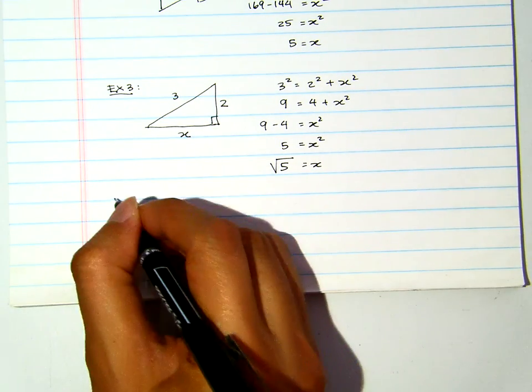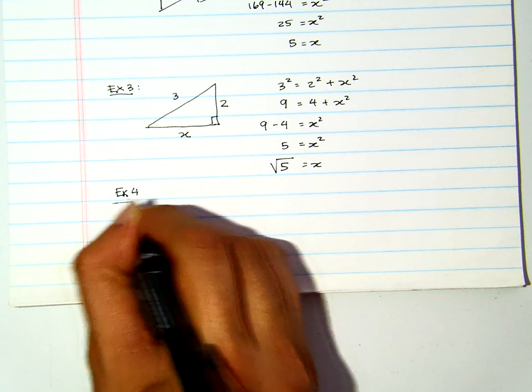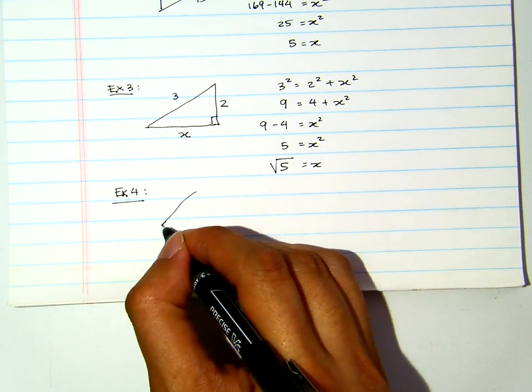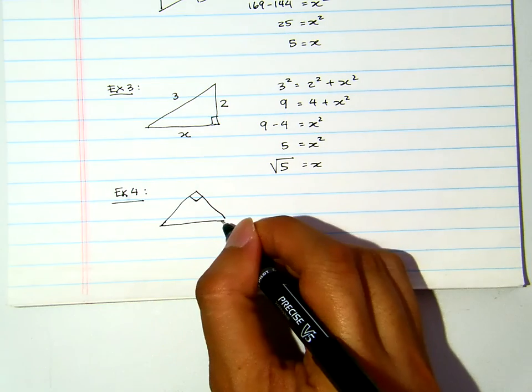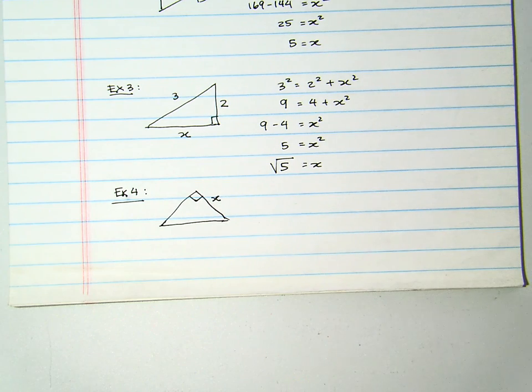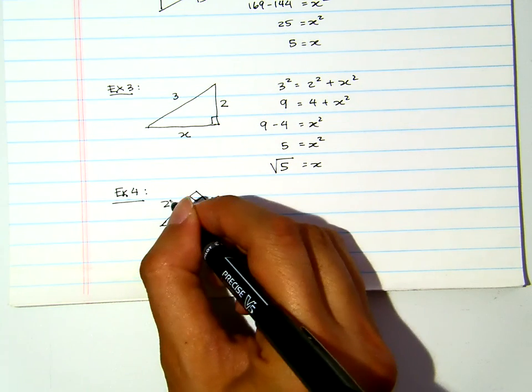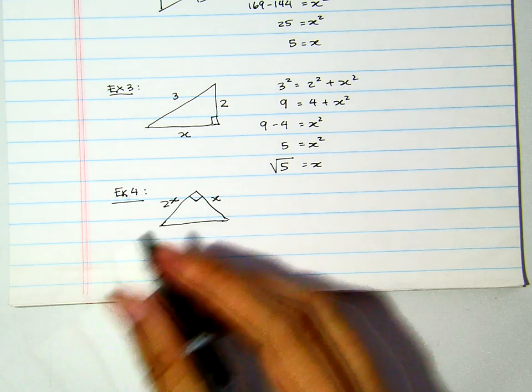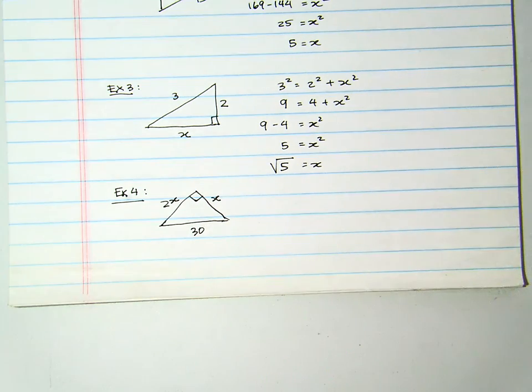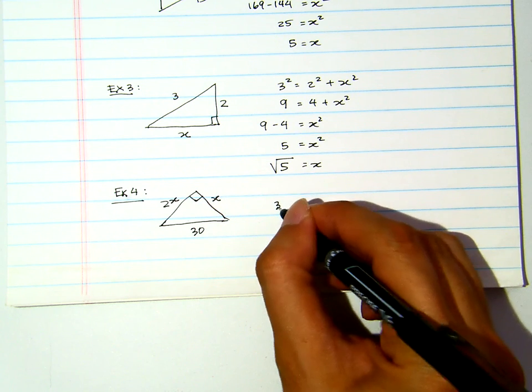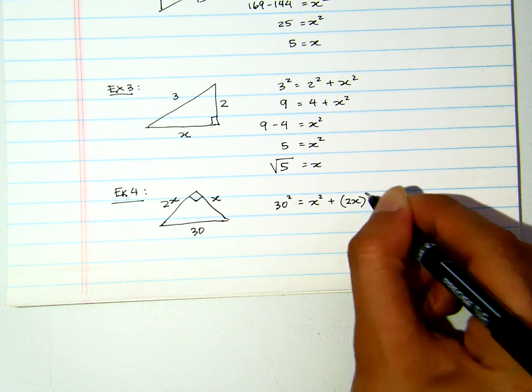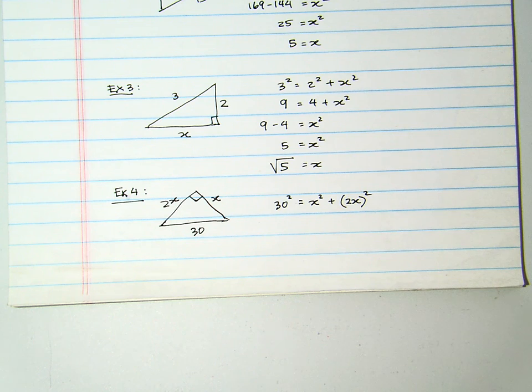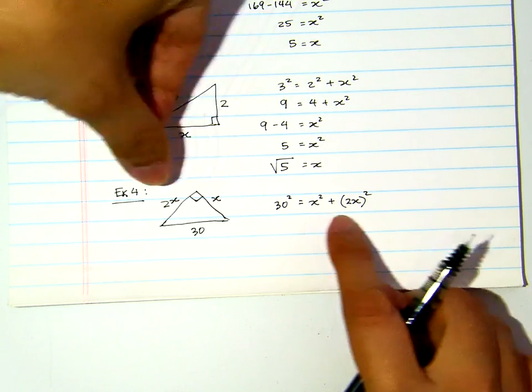Example 4. Suppose I have a right triangle. So, it's like this. And then, we know that one of the leg is X, and then the other leg is 2X, while the hypotenuse, let's say, is 30. I just picked a random number. We will find the X. If we see that the hypotenuse is 30, then 30 squared equals the sum of the squares of the legs. We are squaring the X. We also square the 2X.